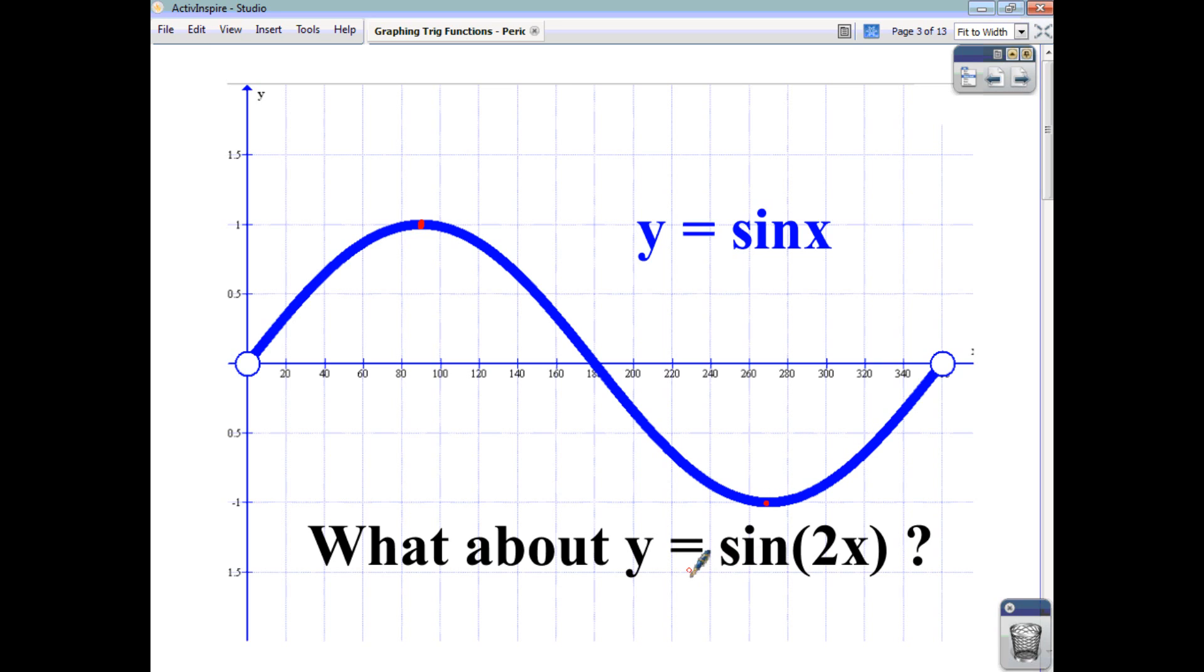Now, for this function here, y equals sine 2x, remembering that this is the angle, and remembering that an angle of 90 is what gives you a value of 1, we know that 2 times 45 gives us 90.